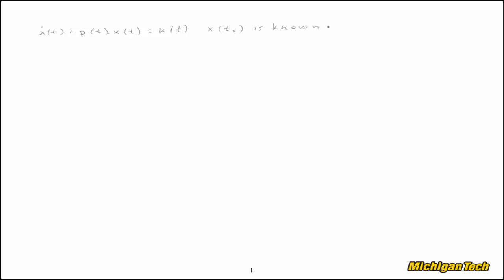What if an m(t) existed such that if we just look at this left-hand side of the equation and multiply it by this function m(t), what if that was equal to d/dt of m(t) times x(t)? If that happened, why would that be such a great thing?